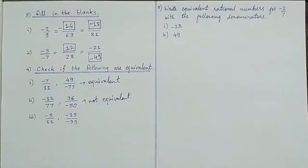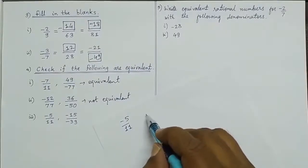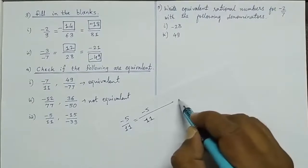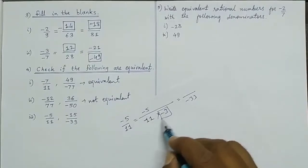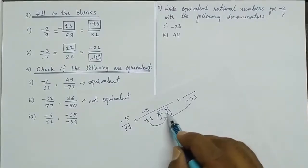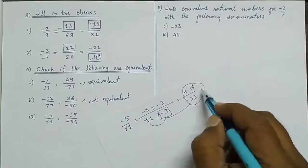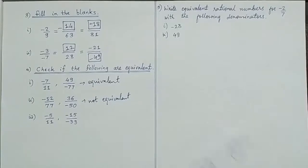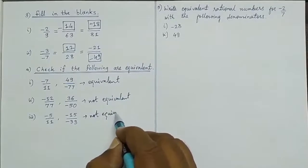Next sum: minus 5 upon 11. We need to get minus 33 as the denominator result. Compulsorily we must multiply minus 3, since 11 threes are 33. If I multiply the numerator by minus 3: minus into minus is plus, and 5 threes are 15, so plus 15. But the given answer is minus, so it is not equivalent.